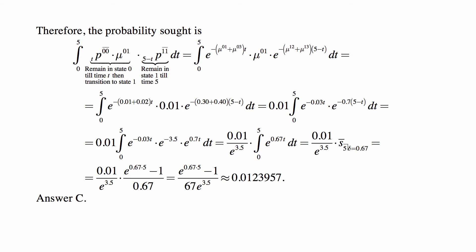And so that the whole thing becomes, well, 0.01 divided by 0.67 is 1 over 67. So it's 67 times e to the 3.5 at the bottom. At the top, we have e to the 0.67 times 5 minus 1. And now you can use a calculator and figure out what this is. And the answer comes out to be about 0.0123957. That's answer C. And we are done with this very nice problem.